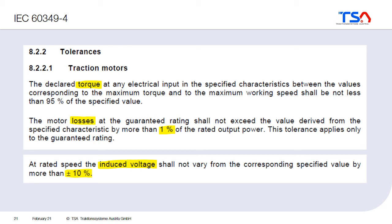The standard also tells us which tolerances are allowed. For torque, it should not be less than 95% of the specified value. For motor losses, they should not exceed the specified losses by more than 1% of the rated output power. The induced voltage shall not vary more than plus or minus 10% from the specified value. This is not always easy to achieve because of tolerances within the magnets — magnetic flux can differ from one magnet to another — as well as variations in magnet size and steel sheet size.